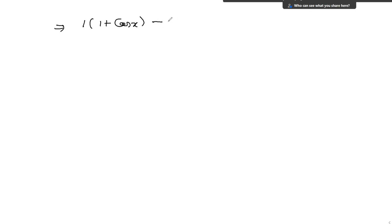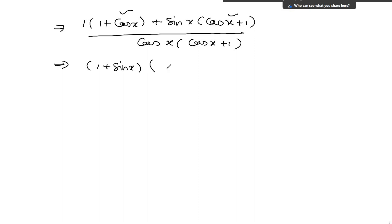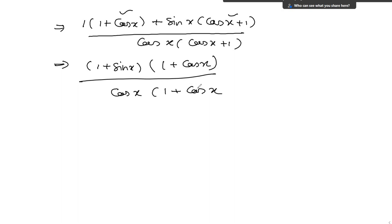I just take 1 common in the numerator — in the bracket, 1 plus cos x — and sin x common in the bracket, cos x plus 1 — same bracket. Divided by cos x times cos x plus 1 in the bracket. So I am just writing this as 1 plus sin x times 1 plus cos x, divided by cos x times 1 plus cos x. So 1 plus cos x and 1 plus cos x cancel out, and we are left with 1 plus sin x divided by cos x.